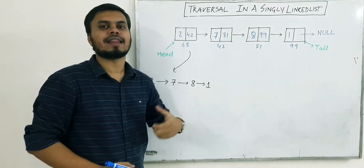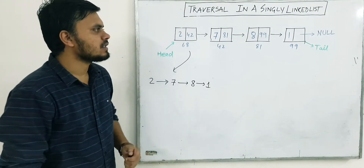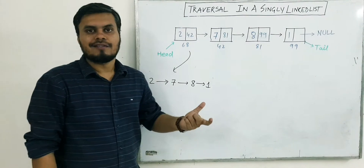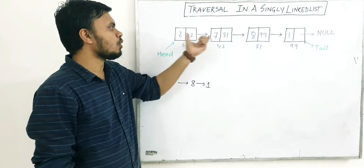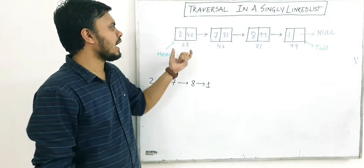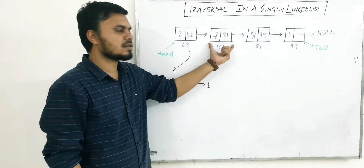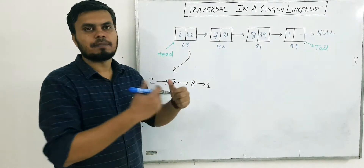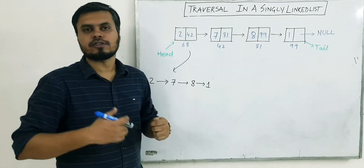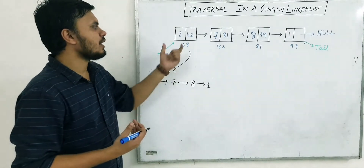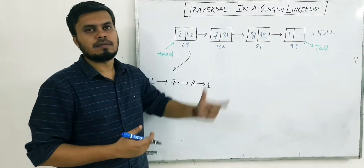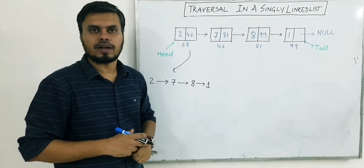You are traversing through every node and printing out the values — the data part, not the address part. Now think about how you can do this, because this is not an array where items are located in contiguous memory. This is a linked list where the address of the next node is stored in the previous node's address pointer.